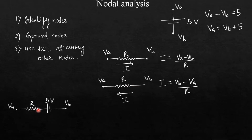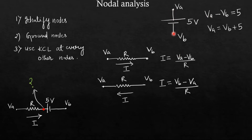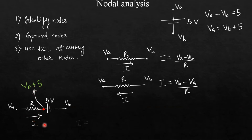In the third case we have a battery along with a resistor and we want the current in a specific direction. At one terminal of the resistor the voltage is Va. On the other side, we use the battery relation: the voltage there is Vb plus 5 because there is a rise of 5 volts moving from minus to plus. So the current expression becomes I equals Va minus (Vb plus 5) divided by R.